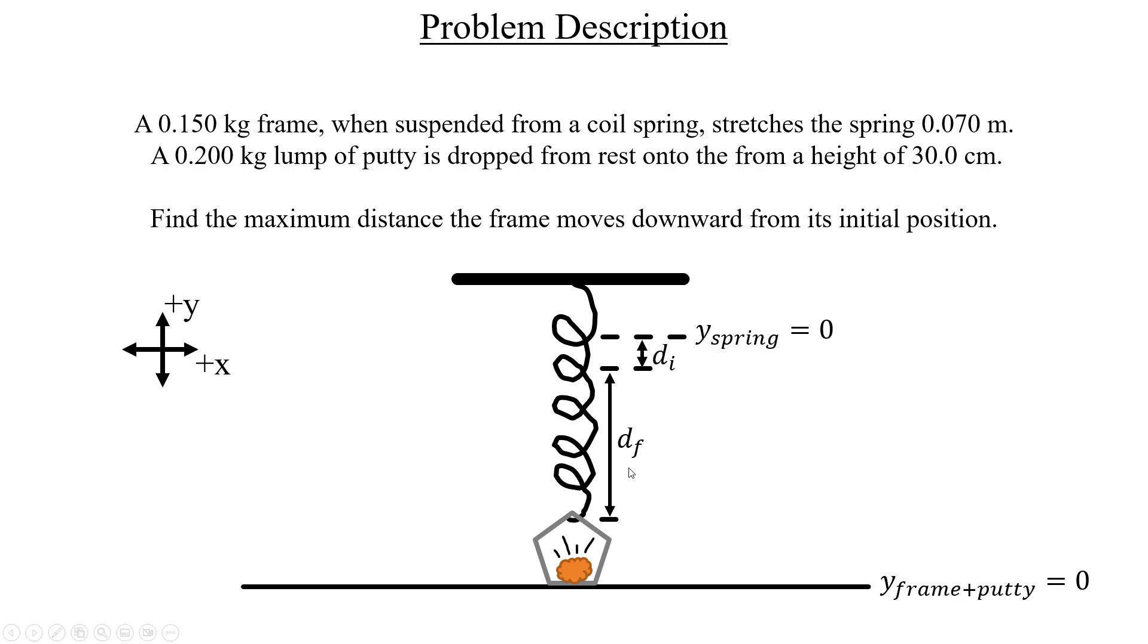And that variable is what we're trying to solve for. I know this can be a little confusing because we have two different locations here for y equals zero. But that's okay, because it's for two separate objects that have completely different behaviors. The frame and the putty together want to fall to the ground under the influence of gravity. On the other hand, the spring wants to move upwards instead and snap back to its original length. That's why we're able to set two different zero points in the y direction for those.